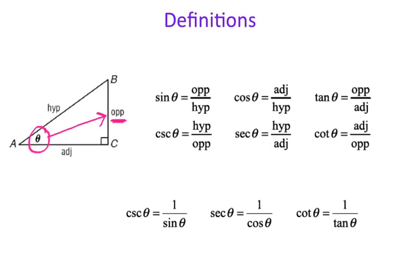Adjacent means next to, so the side that's right next to my angle is the adjacent. And the hypotenuse is the longest side, but your hypotenuse is also opposite the right angle. So there's your hypotenuse. Once I have those 3 sides labeled, I can go ahead and find 6 trig functions.